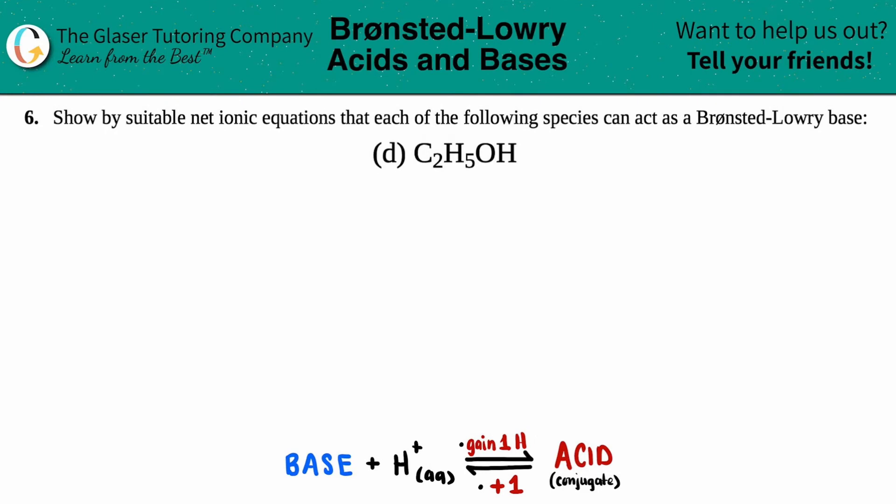Number six: Show by suitable net ionic equations that each of the following species can act as a Brønsted-Lowry base. We have letter D out of the bunch, so in this case we're saying that C2H5OH is going to act as a Brønsted-Lowry base. That's pretty interesting - this is ethanol, the alcohol that we drink.